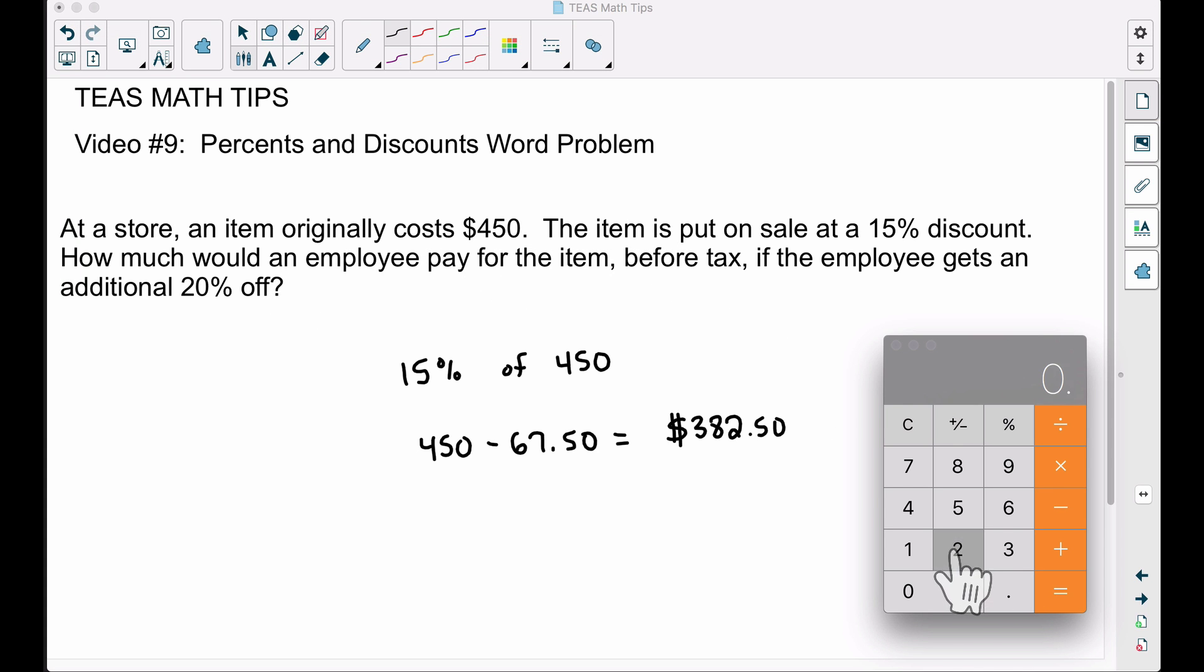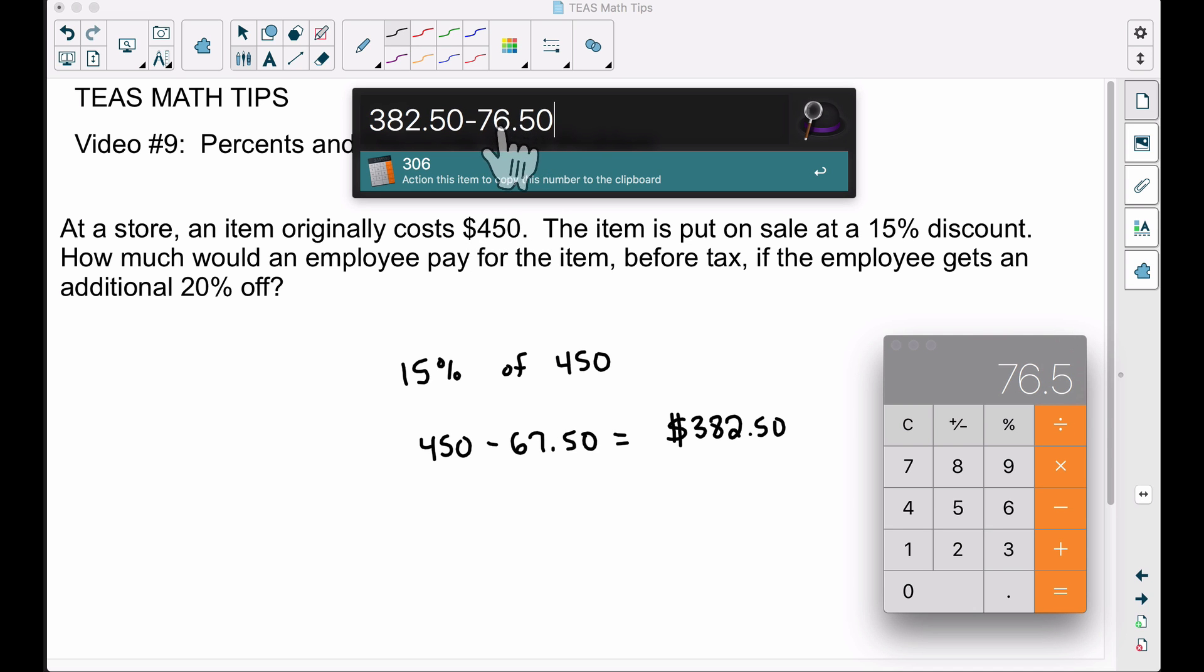So let's find 20%. 20% of that means multiply 382.50. So that's going to be an additional $76.50 for the employee's discount.